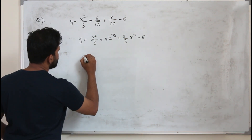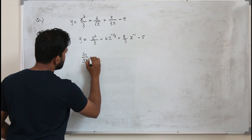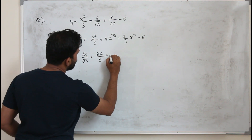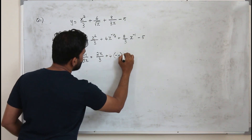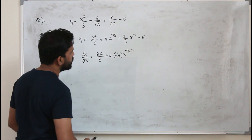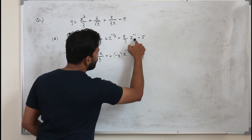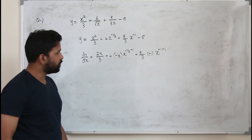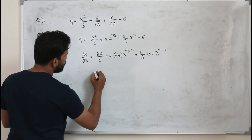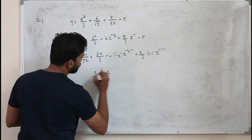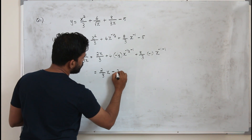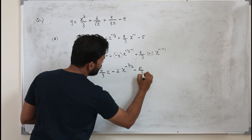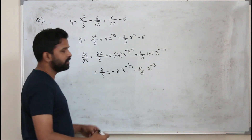Now differentiate. dy/dx equals: derivative of x squared is 2x over 3, then 4 times n times x to the power n minus 1, plus 8 over 3 times n times x to the power n minus 1, and minus 5 becomes 0. Tidying up: 2 over 3x, minus 2x to the power minus 3 over 2, minus 8 over 3 x to the power minus 2. That's your answer.